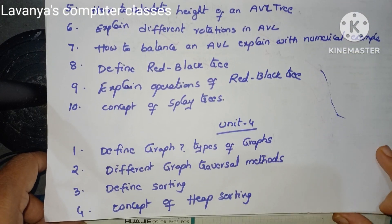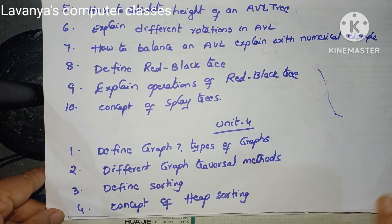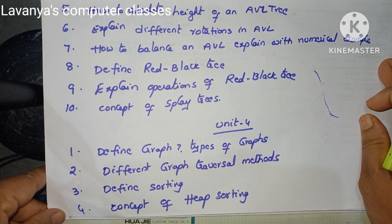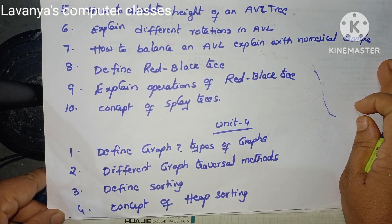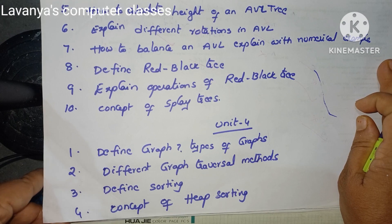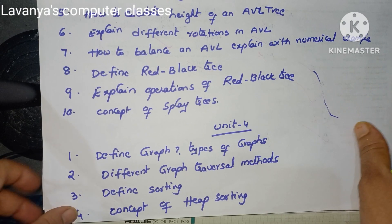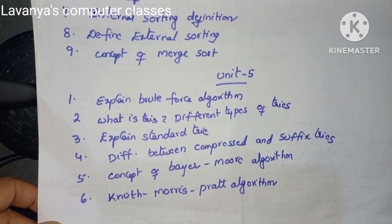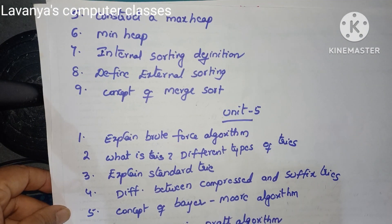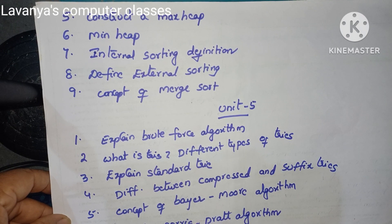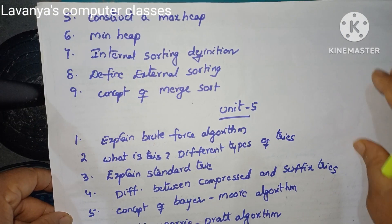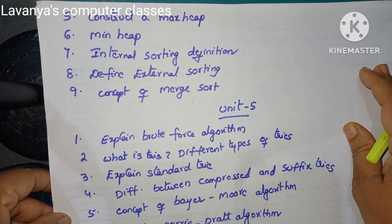Unit 4 important questions are: define graph; explain the different types of graphs; different graph traversal methods — BFS and DFS; define sorting; explain the concept of heap sorting and construct a max heap; how to construct a min heap; what is internal sorting; define external sorting and give examples; and explain the concept of merge sort.